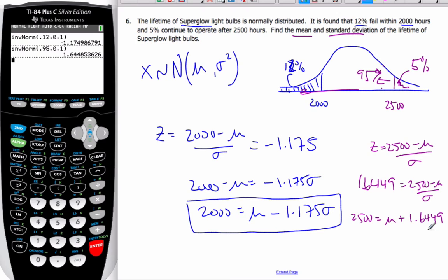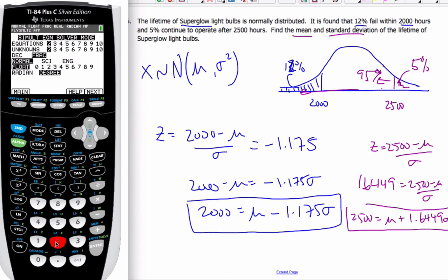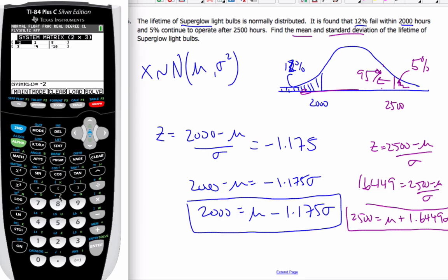And now if I take this second equation and these two equations, I can simultaneously solve them. The easiest way is to use my apps. Go to simultaneous. Use two equations, two unknowns. And I know I have one negative 1.175 and 2000. And I have one positive 1.6449 and the last value is 2500. Enter that in and then hit solve.